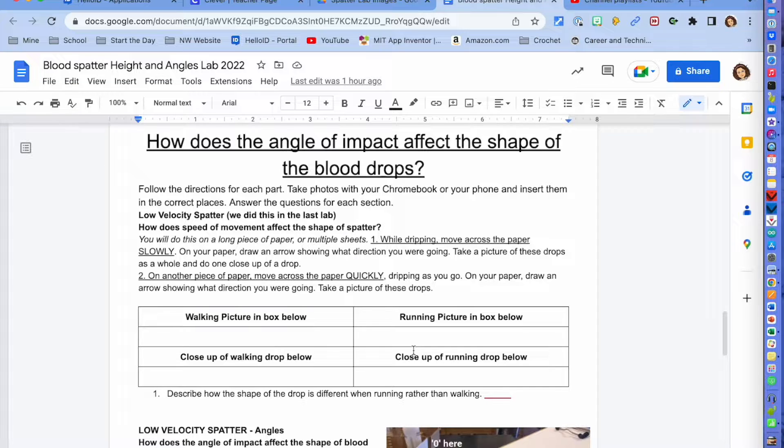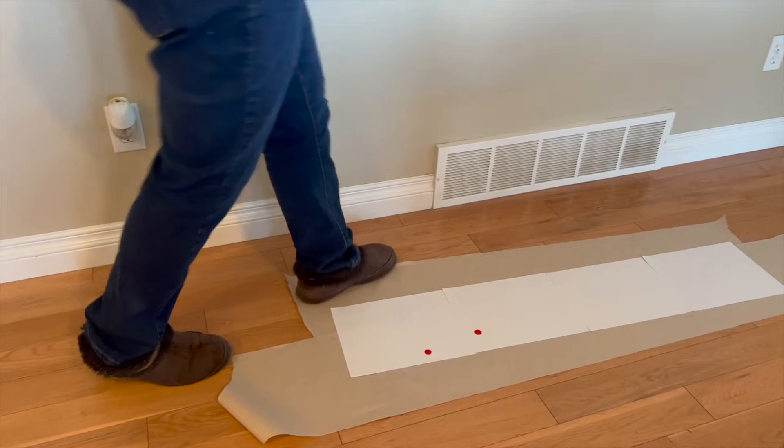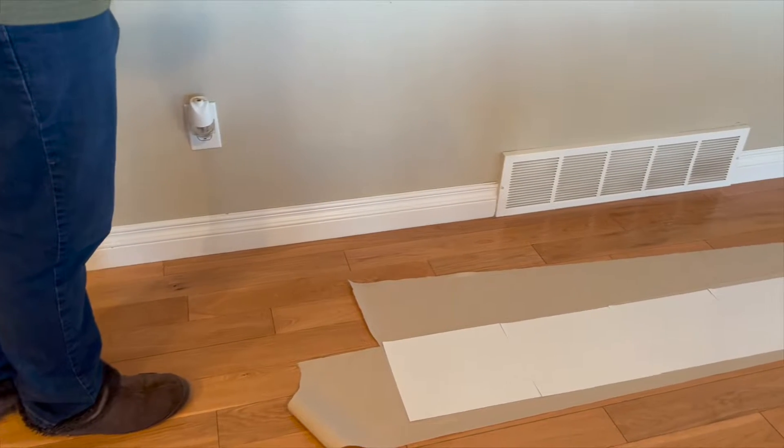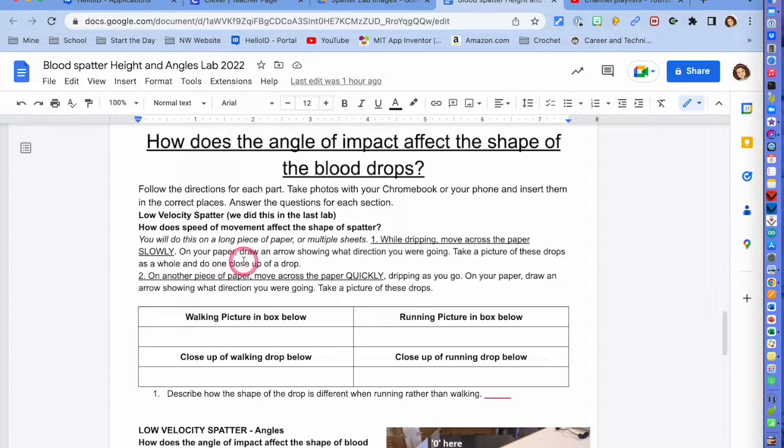So you're going to lay out a set of four pieces of paper that are all taped together and you're going to drip your synthetic blood as you move across the paper slowly for the walking. And then quickly for the running and then you are going to get a close-up photo. You're going to get a far away photo of each and then a close-up photo showing the drops so that you can actually see the feathering and the directionality of the drops.